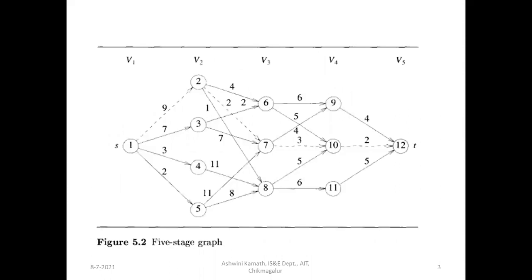This example is a five-stage graph with stages V1 through V5. V1 contains vertex 1 (source), V2 contains vertices 2, 3, 4, 5, V3 contains vertices 6, 7, 8, V4 contains vertices 9, 10, 11, and V5 contains vertex 12 (sink). The goal is to find the minimum cost path from vertex 1 to vertex 12.